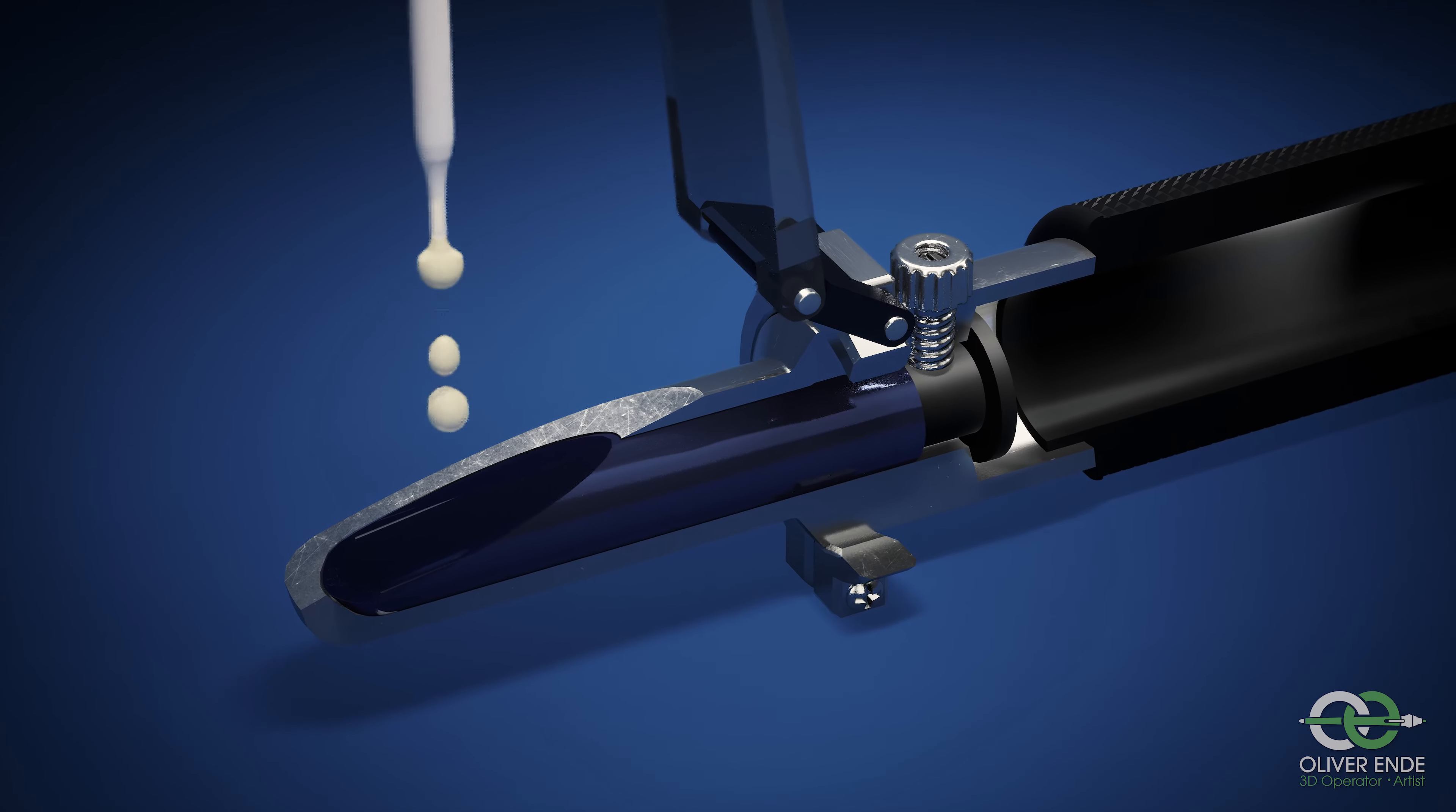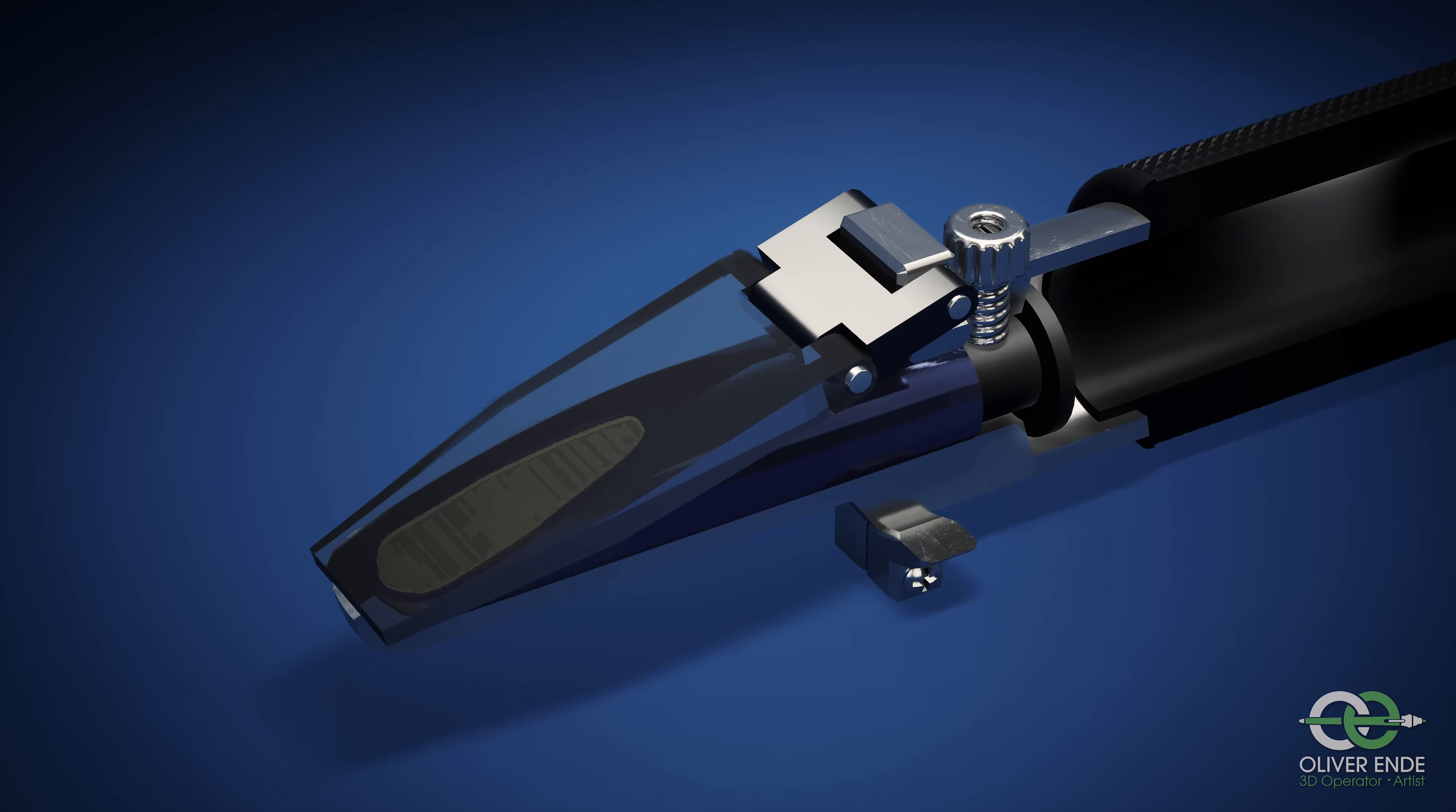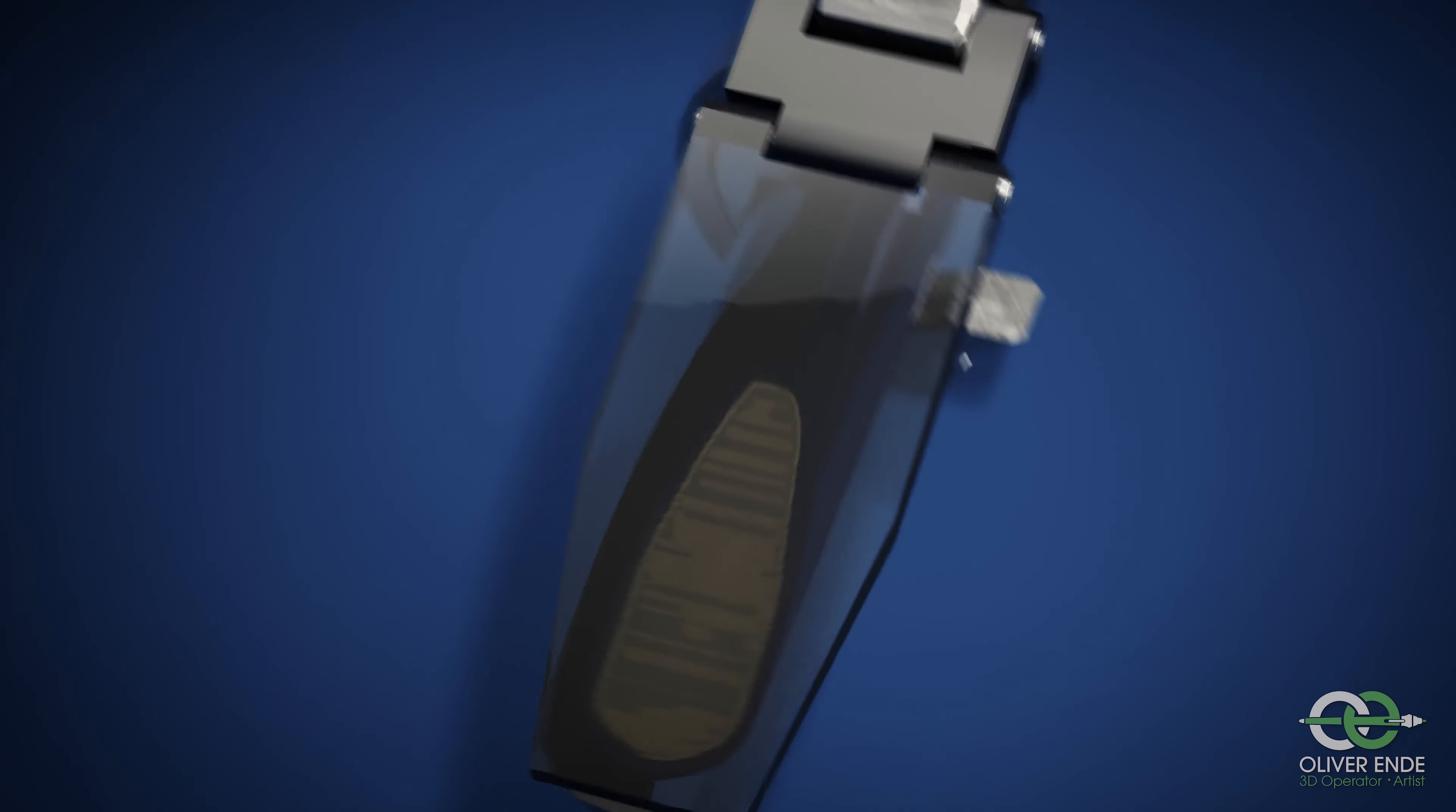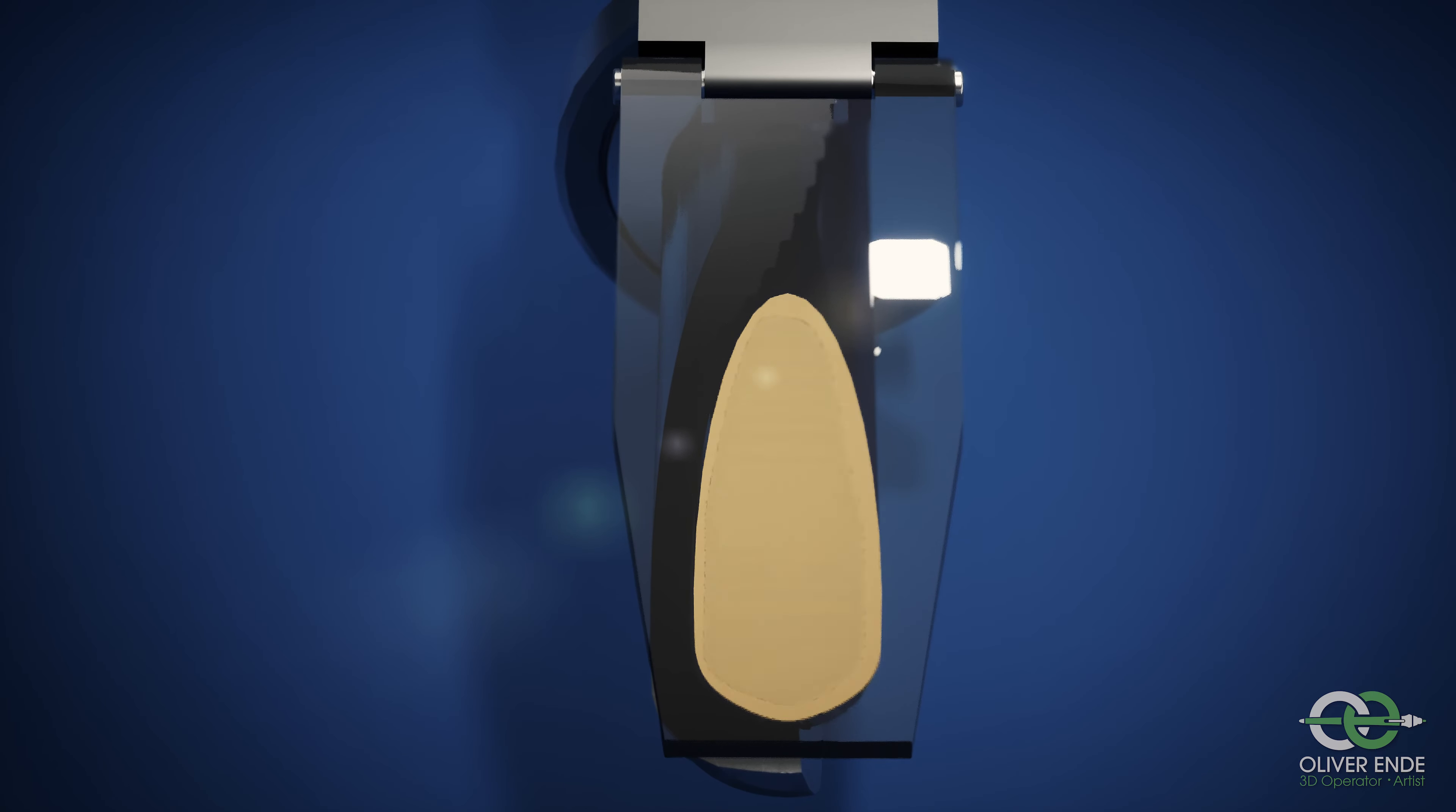After the liquid has been dribbled onto the prism, the cover is closed, which distributes the liquid evenly on the prism. It is important that the liquid is distributed over the entire prism surface because measurement errors can occur due to uneven distribution.